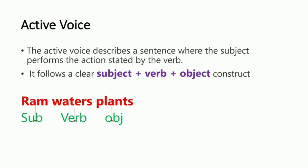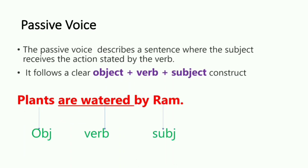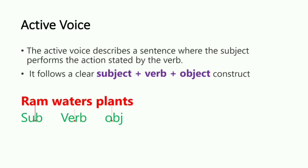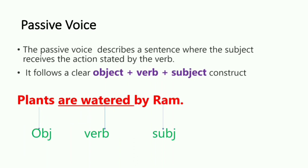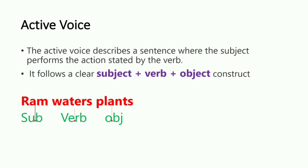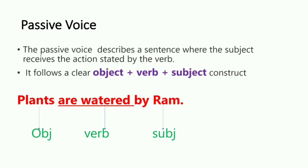In active and passive voice, you say the same sentence in two ways. For example, 'Ram waters plant' — this is our active voice sentence. In passive voice, we say: 'Plants are watered by Ram.' Ram waters the plants — and the plants are watered by Ram. It is the same meaning expressed in two ways: active voice says it one way, passive voice says it another way.